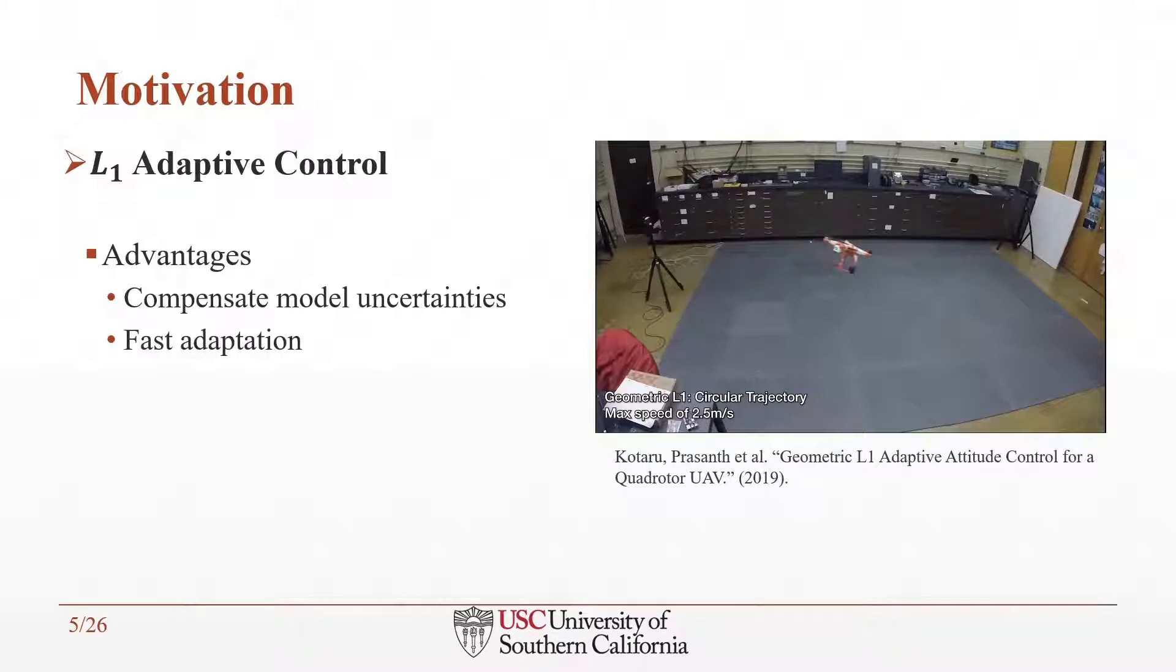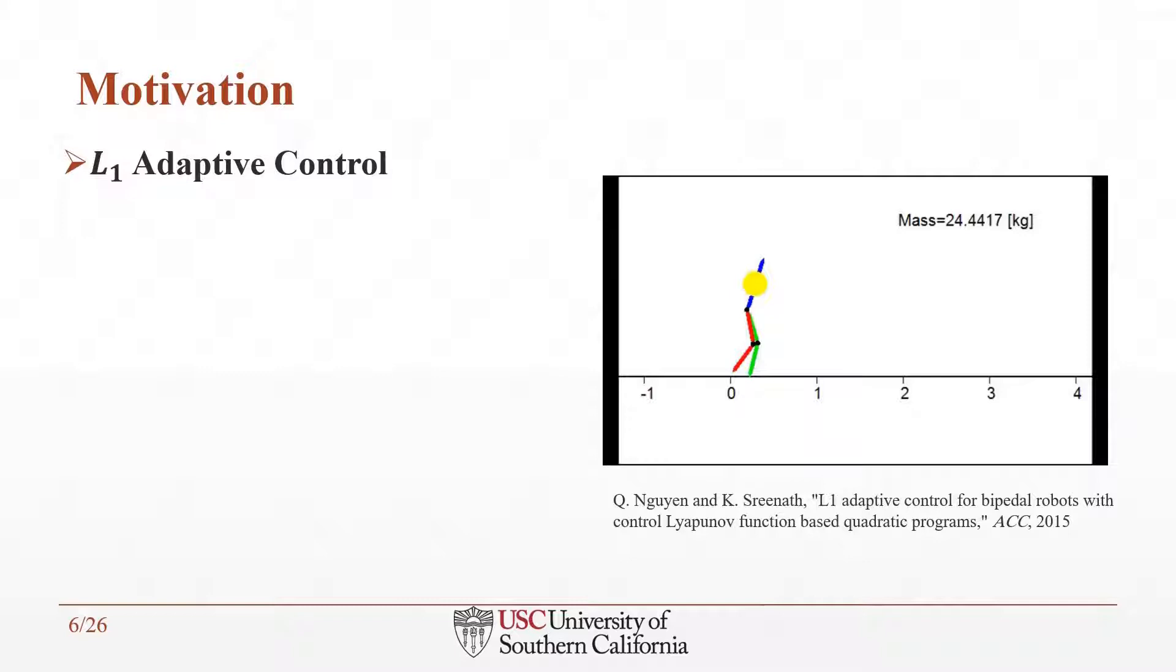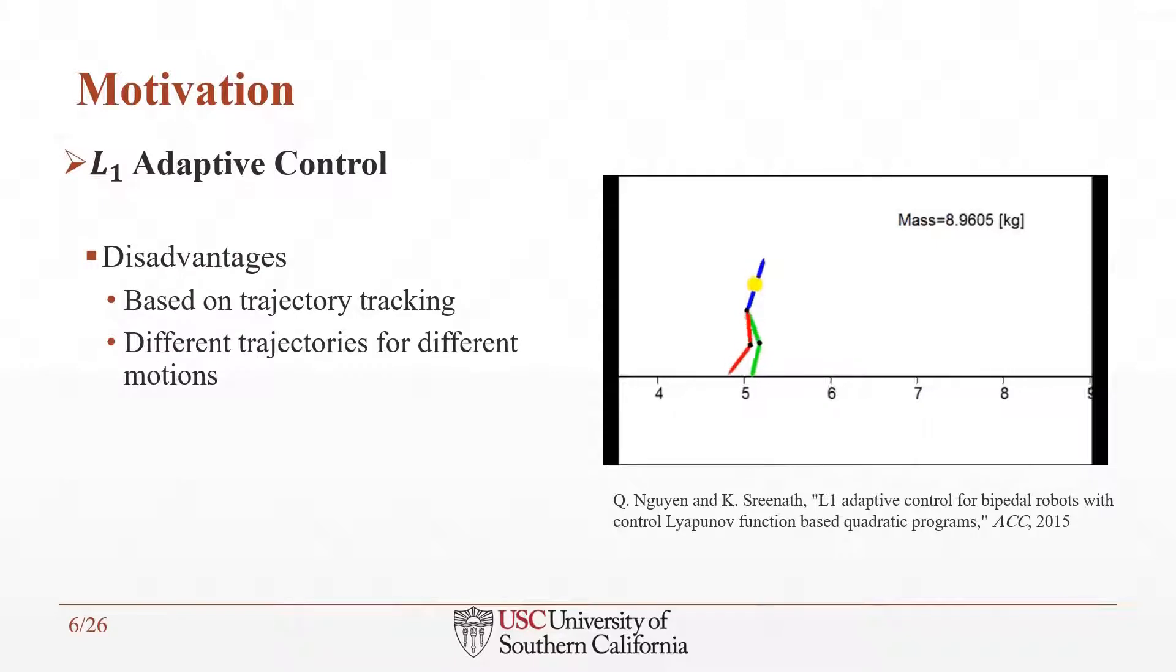In addition, the L1 adaptive control system adapts to the model with uncertainty very fast. In our previous work, L1 adaptive control was used to handle uncertainty for bipedal robots. We are required to use position control for trajectory tracking and it just works for one single walking gait. So the current framework of L1 adaptive control needs trajectory tracking and for every different motion it requires a predefined trajectory.